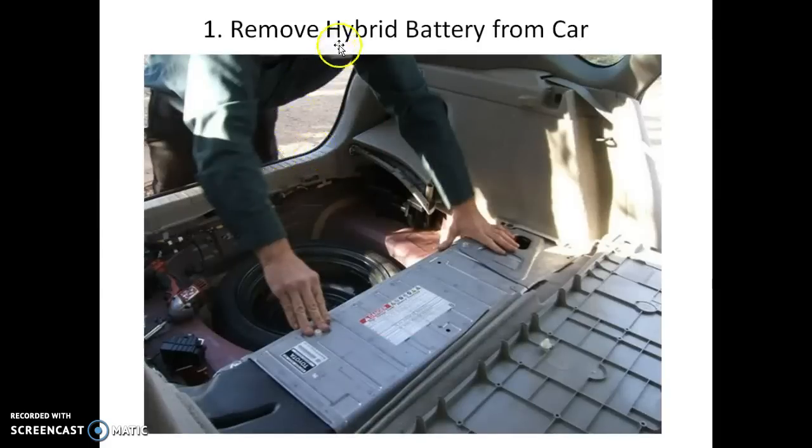The first thing you need to do is remove the hybrid battery from your car. This is what it looks like for a Prius. This procedure works for a Camry, a Prius, a Nissan Altima, a Lexus hybrid, and I think the principle is the same for any other hybrid vehicle. You need to remove the hybrid battery from the car. I'll post the link to a video on how to do that in the comments, because there's no sense of me wasting my time when other people have done a much better job of those videos.